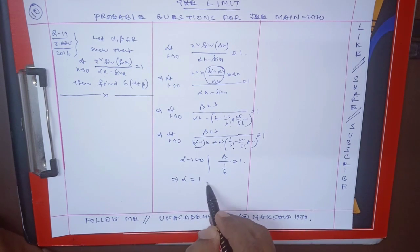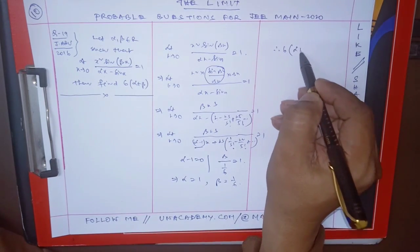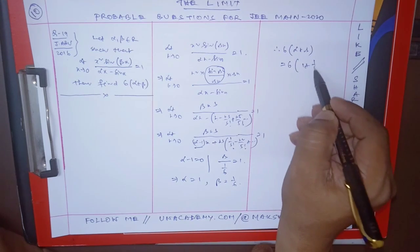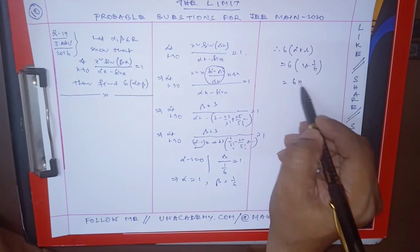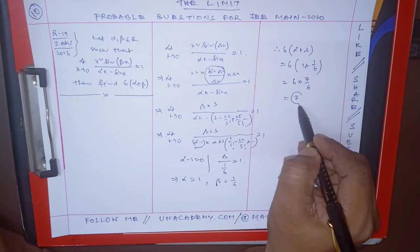So alpha is equal to 1 and beta is equal to 1 by 6. But what you have to find is 6 times of alpha plus beta. Alpha is 1, beta is 1 by 6, so 6 into 7 by 6, that is equal to 7.